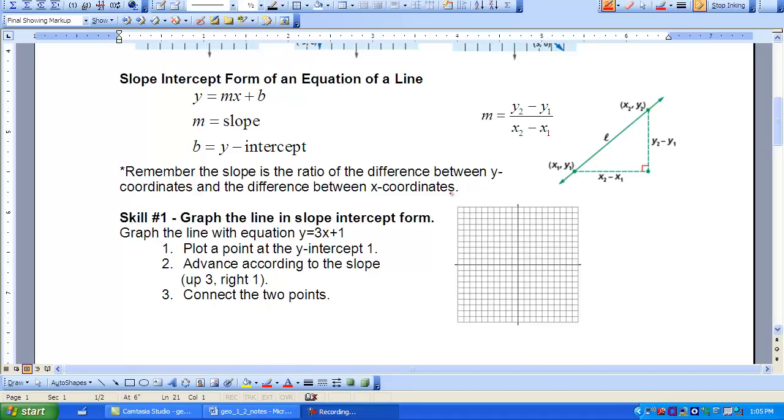The first skill you'll be asked to perform in this lesson is to be able to graph the line in slope-intercept form. So here I have an equation to graph the line with the equation Y equals 3X plus 1. The first thing we want to do is plot the point at the Y-intercept. So our Y-intercept here is at 1. So I'm going to just plot 1.